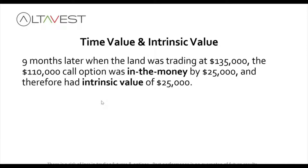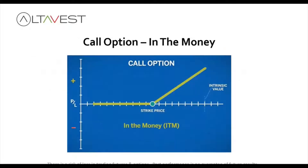What about nine months later when the land was trading at $135,000? The $110,000 call was in the money by $25,000 — that was the intrinsic value. On the graph, if you have the ability to buy something at $110,000 even though it's trading at $135,000, then that option is in the money and it has intrinsic value.